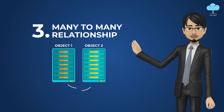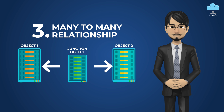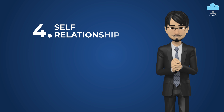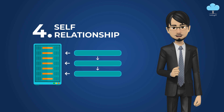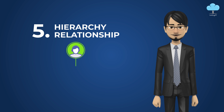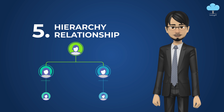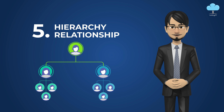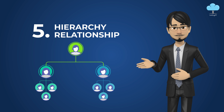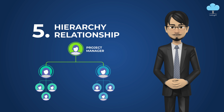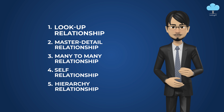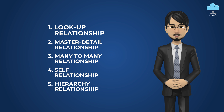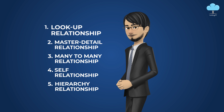one object's records to another object's records in a many-to-many formation using a junction object. Fourth is self-relationship, where we have only one object and we connect the record of the same object to another record of the same object. And the last one is hierarchy relationship, which is used for representing a company's hierarchy — a senior-junior combination. For example, for a given user, who is the project manager and who is the team lead. These five relationships we can use in Salesforce projects in different scenarios, giving a better representation of our Salesforce project from the customer point of view.